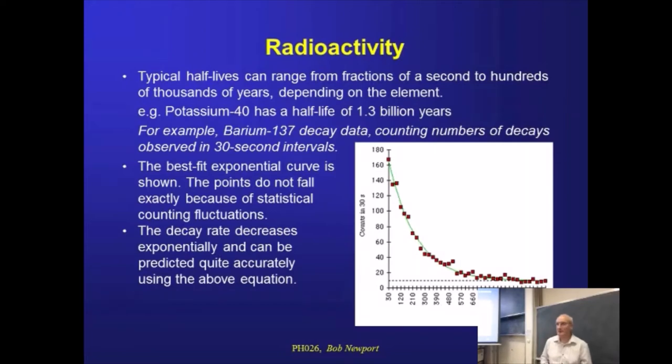Now, these vary enormously, absolutely enormously. There are some isotopes. The example I've given there, this isotope of potassium, potassium-40, has a half-life you can measure in billions of years. Others, like Barium-137, as we've seen from this graph, decay away with half-lives in the region of a couple of hundred seconds.